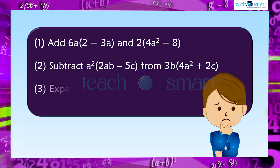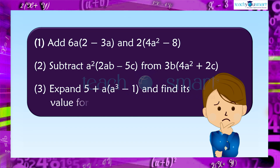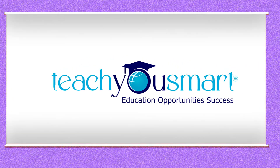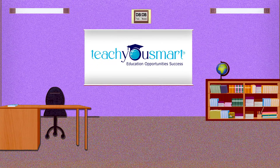Question 3: Expand 5 plus a, multiplied by a cubed minus 1, and find its value for a equals 0. That's all for now. See you all in the next class.